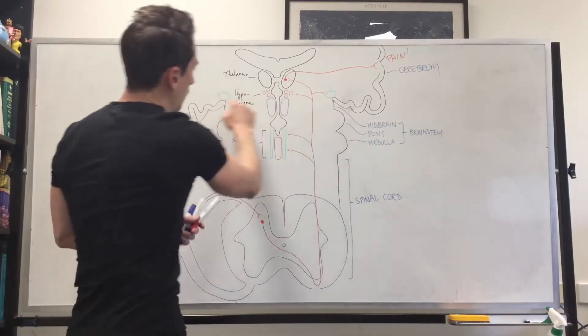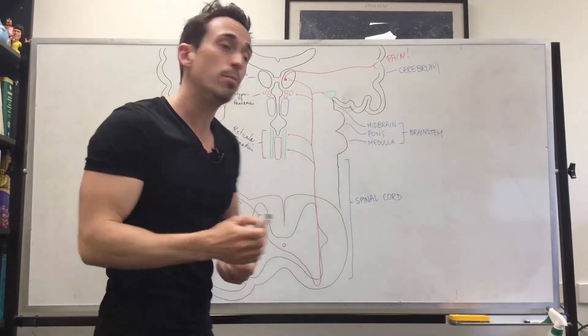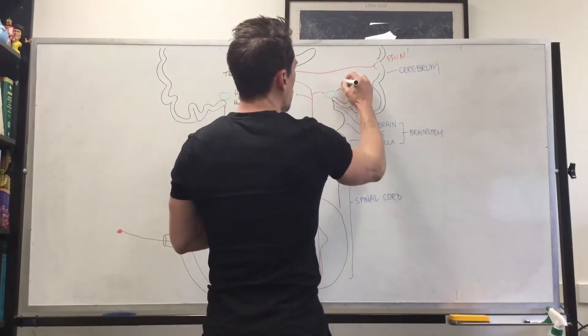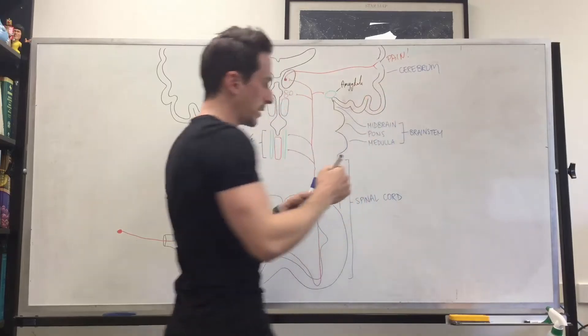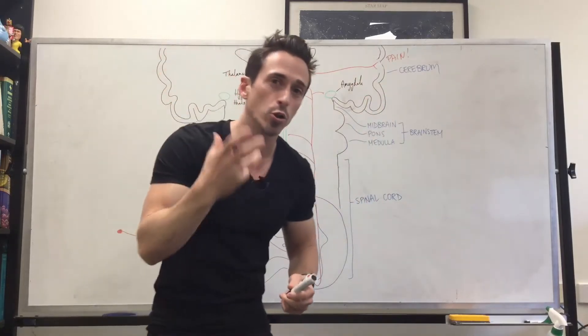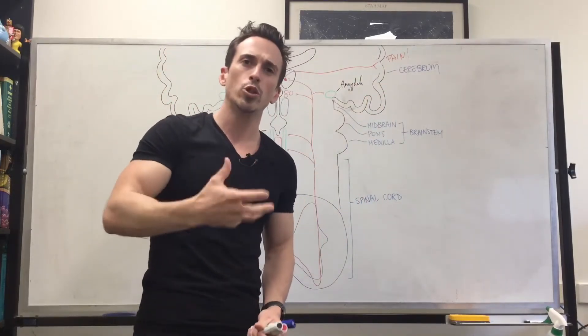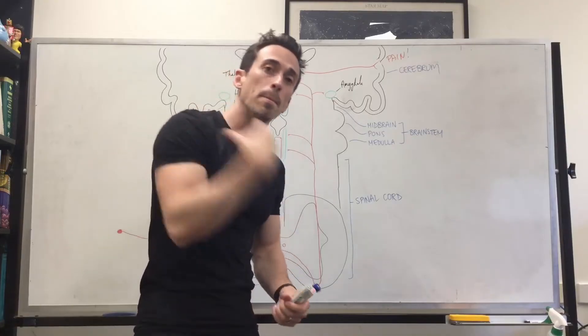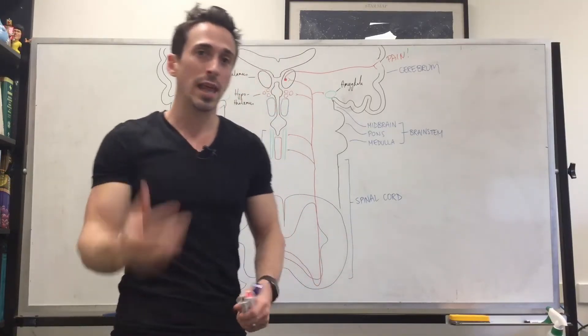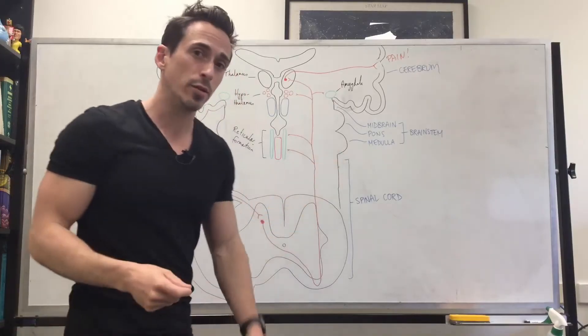All right. This little area here and here, this is part of the limbic system. This is called the amygdala. And the amygdala is important in regards to emotional response. Why do we want to have an emotional response to pain? Because it's emotion that will drive our behavior, which is going to hopefully allow for us to avoid this experience again.